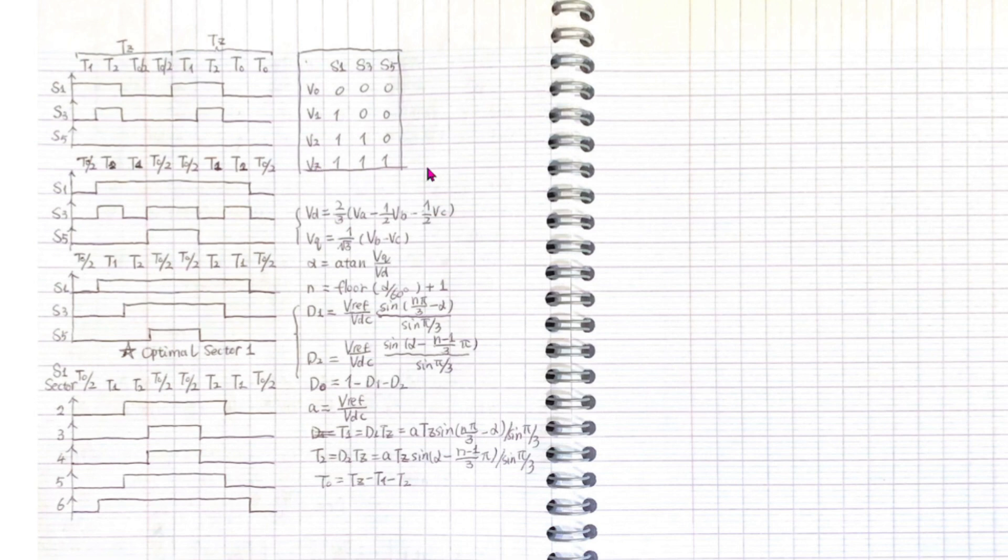For the first sector, if we follow the V1, V2 and V0 to switch, we can see that for each cycle we need to switch S1 twice and S5 three times, S3 zero times. It's not a balanced way. We can try another way to switch. This mode switches more S3. The most optimal way is this one.